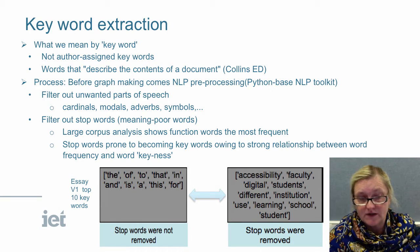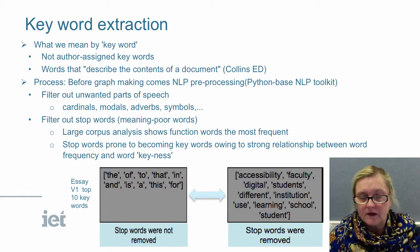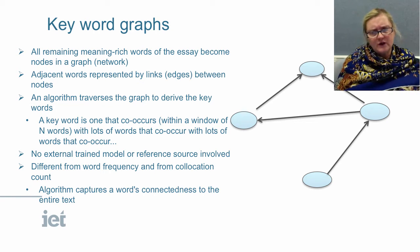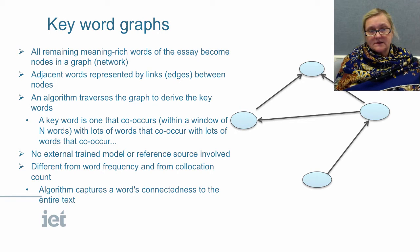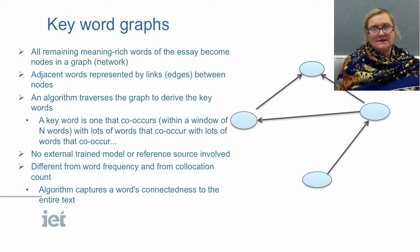If you look below, you can see Essay version 1, top 10 keywords. The stop words shown are what you get when they were not removed, and then when you get rid of those stop words you can see how much more meaningful the words become. The natural language processing then takes place based on an algorithm — so it's not due to just frequency. I've built systems before, like Open Mental, where we looked at frequency of words. Here, all the words of the essay become nodes in a graph, as you can see on the right-hand side of the slide. They are linked with edges, and then an algorithm traverses the graph to derive the key words — finding the connectedness of the words.